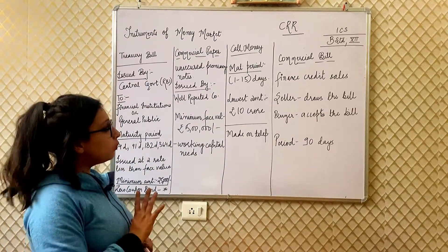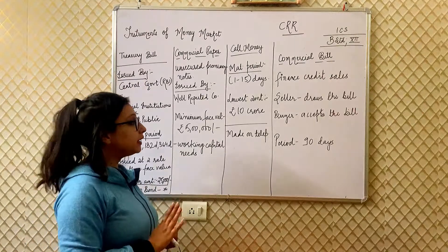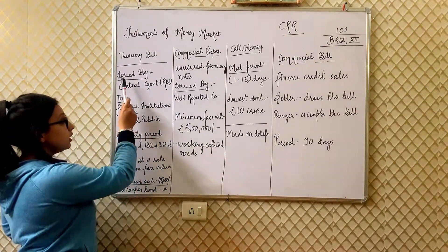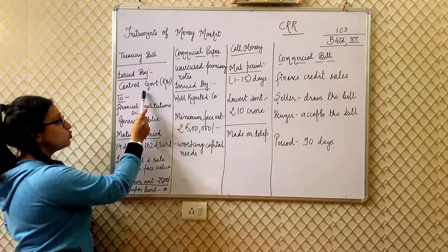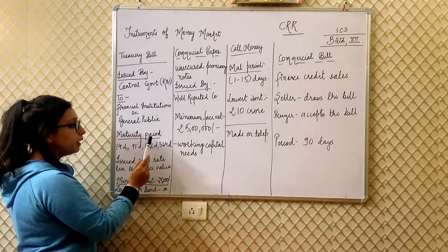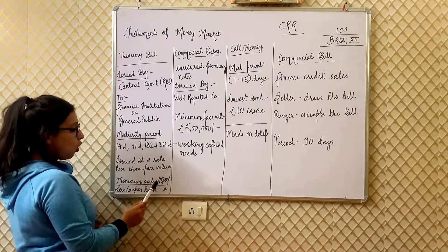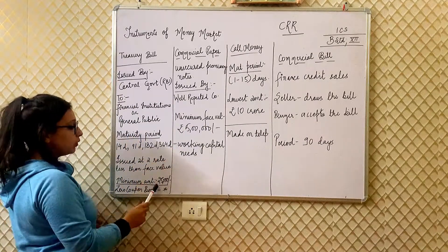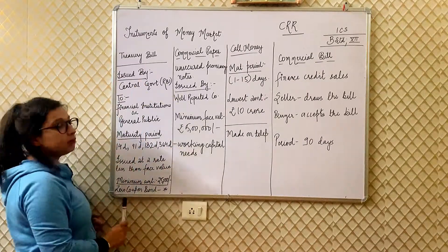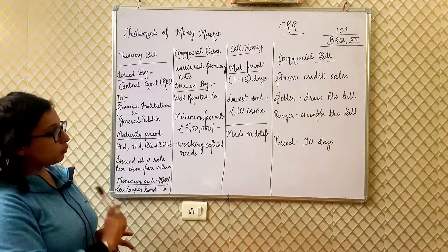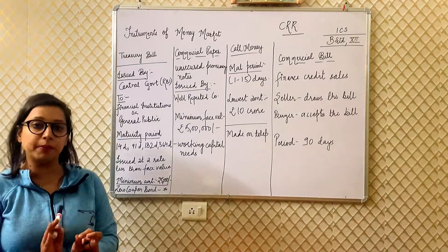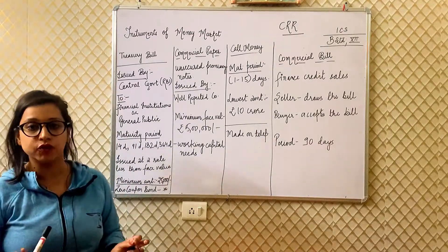So these are the instruments of money market — the financial securities with maturity period less than one year. The key points to remember are: what it is, who issues it, what the maturity period is, and what the minimum value is. These points are sufficient to answer all questions on money market.